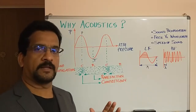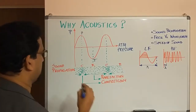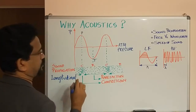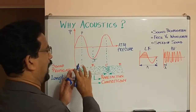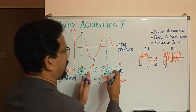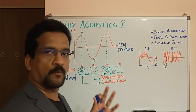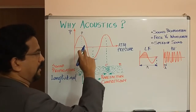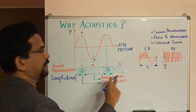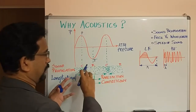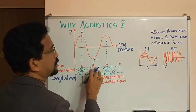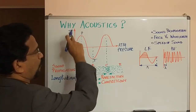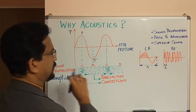Sound propagation in air is longitudinal. A longitudinal wave has a pattern of compression and rarefaction — the air molecules are highly concentrated in the region where there is a peak, and when there is a trough, it is a rarefaction where the concentration of air molecules is much less. So the pressure is higher at the peak and lower at the trough — the y-axis represents the pressure of the air molecules.